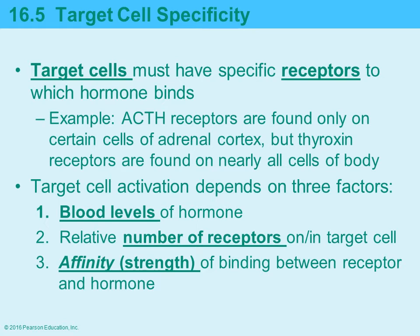Second, the concentration of hormone in the blood at any given time matters — it changes over time, and lower blood levels mean a lower chance of binding. Third is affinity, which is the strength of the binding between the receptor and the hormone — how well they are attracted to and physically bind to each other.